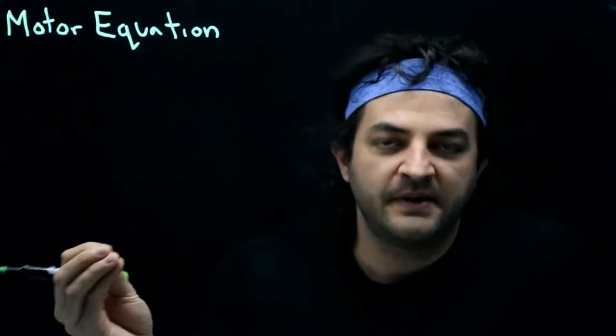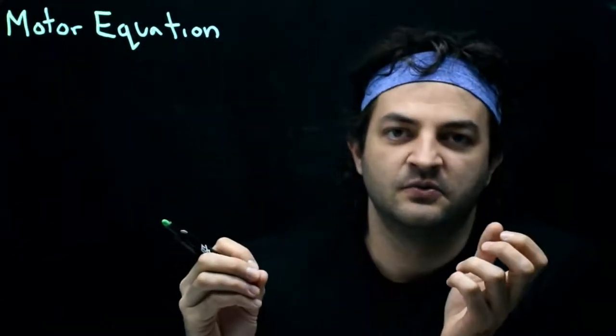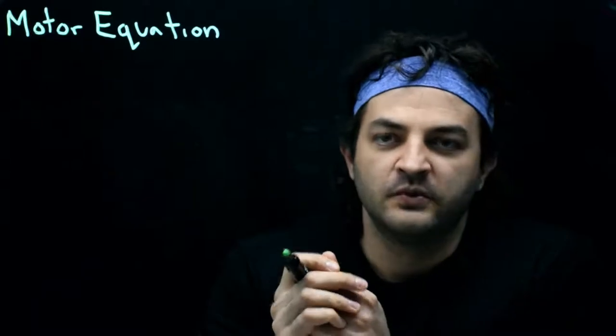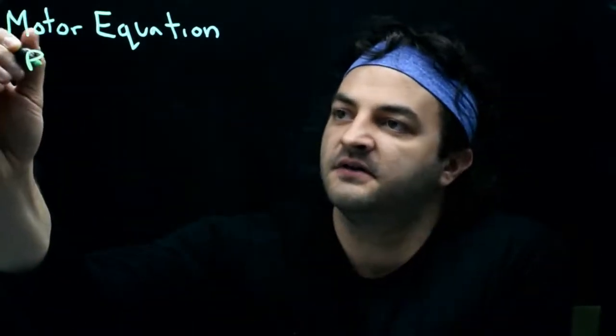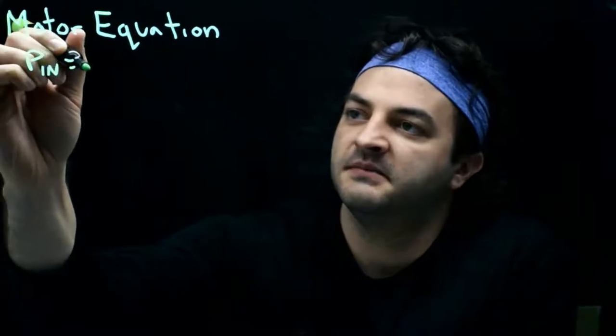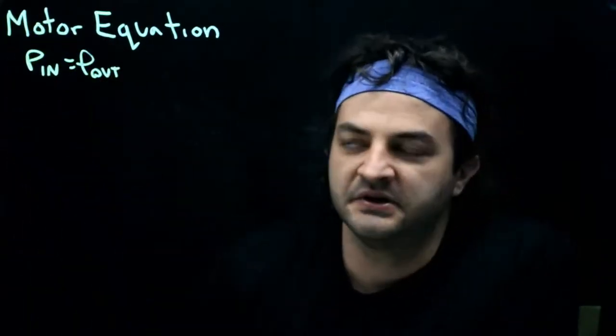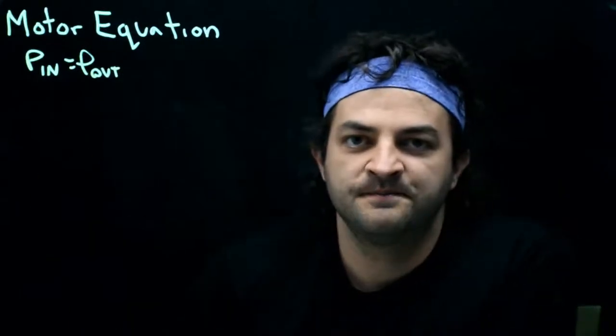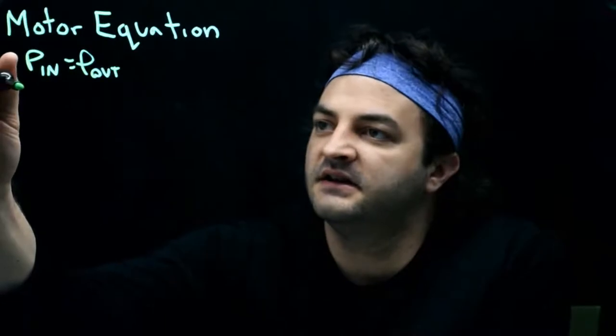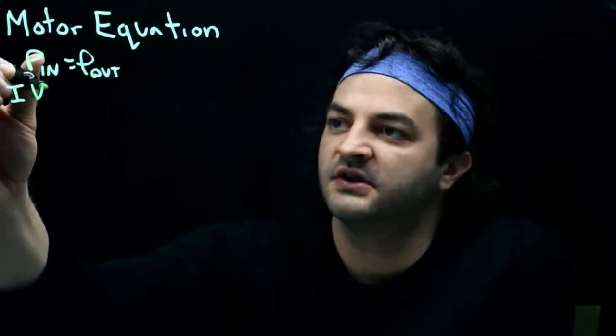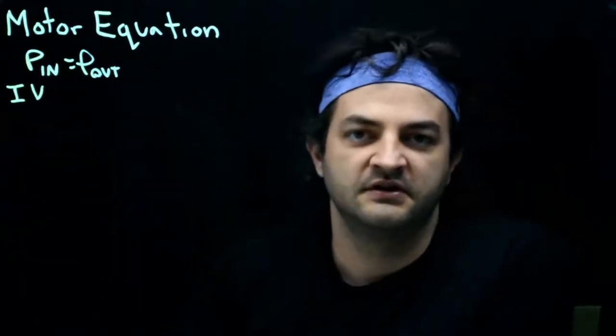We've got electrical power that goes into our motor and then out of the motor comes mechanical work. So we can always start with some kind of power equation that the power that goes into our motor must be equal to the power that comes out. We get this from thermodynamics. What's the power that goes into our motor? It's the current that we put in times the voltage that we're putting across the motor. So amps times volts is watts.